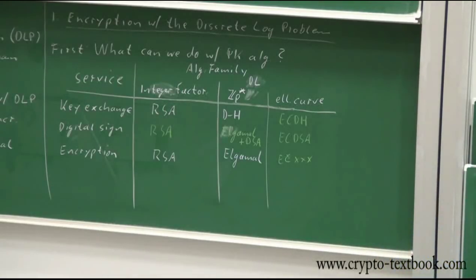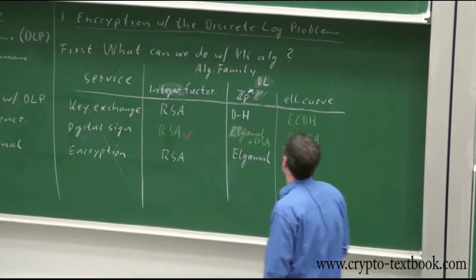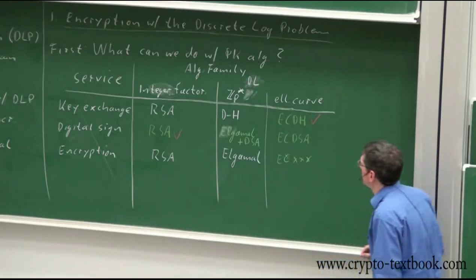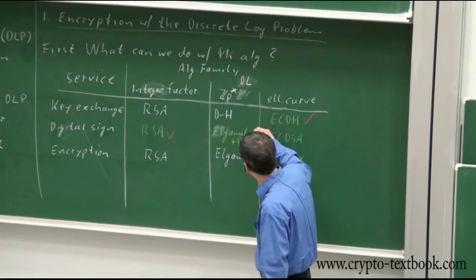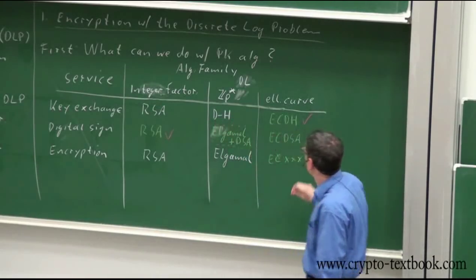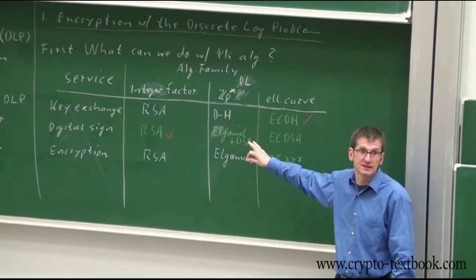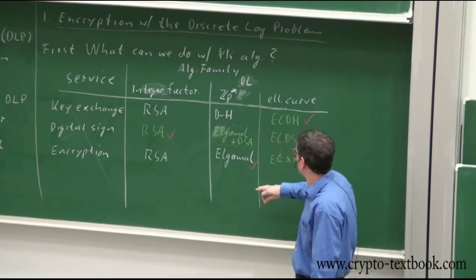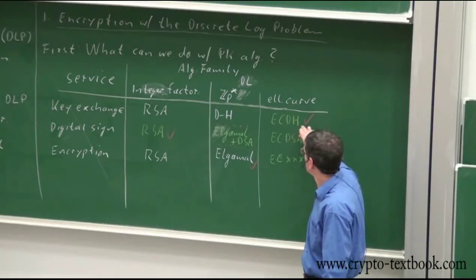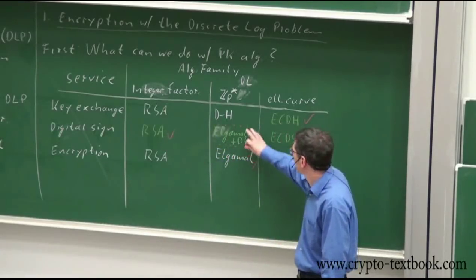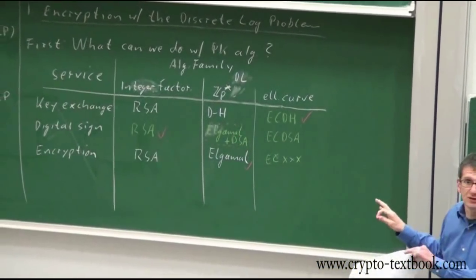In this lecture, we're definitely doing ElGamal encryption, EC Diffie-Hellman, and depending on time, one of the signature schemes. We're not doing EC DSA — it's in the book if you're interested. The big things: today we do ElGamal encryption, the next two times we meet we talk about elliptic curve Diffie-Hellman, and then once we start digital signatures, we do RSA digital signature and maybe ElGamal digital signature. This is the universe of public key algorithms.